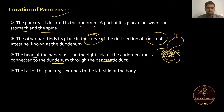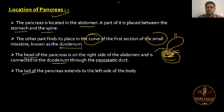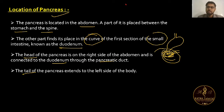The tail of the pancreas extends to the left side of the body — toward the spleen. The head is attached to the duodenum through the pancreatic duct, and the part on the left side near the spleen is the tail.